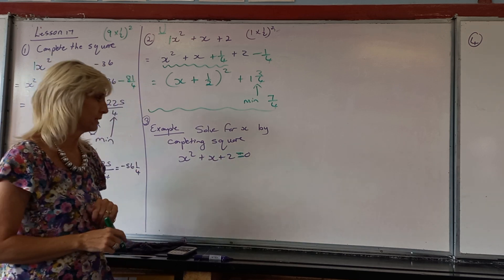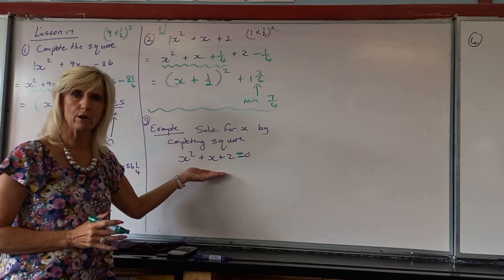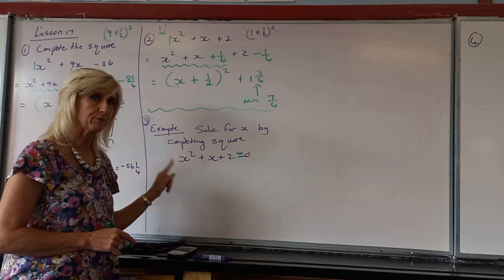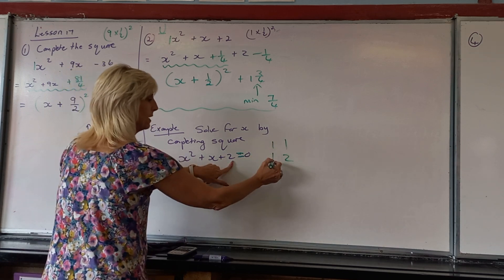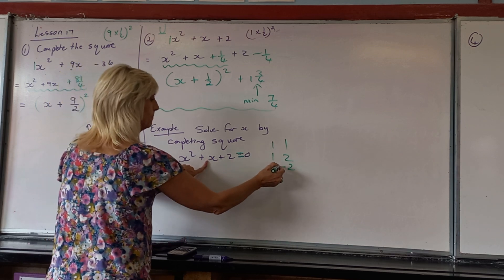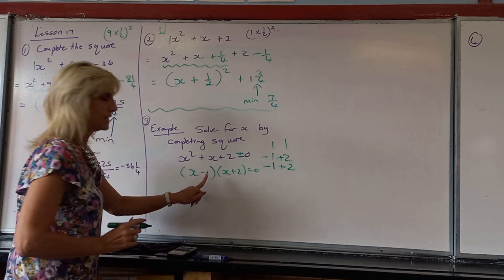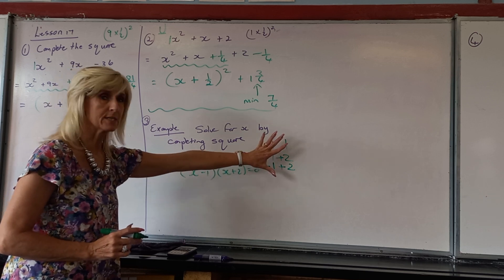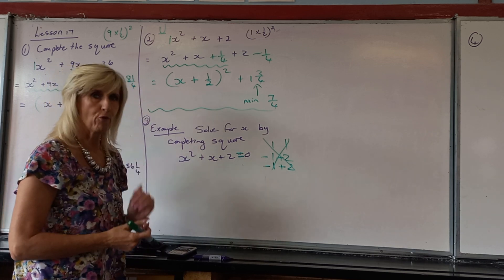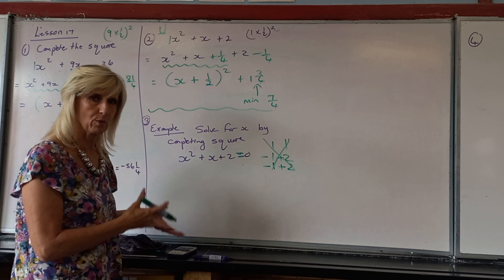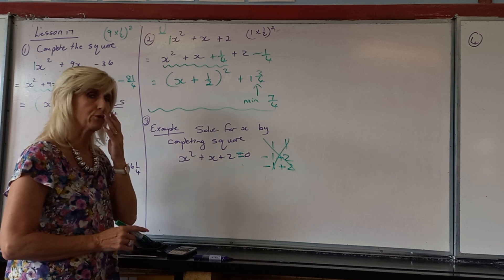First things first — you always have to have a process. If you're told to solve for X and it's quadratic, put it equal to zero. Then try and factorise. If you try and factorise it with factors like X minus 1 and X plus 2, you check: negative 1 times 2 is not plus 2, so it doesn't work. If it doesn't factorise, you go for the quadratic formula. But since the question says to use completion of the square, even if it did factorise, you've got to do completing the square.